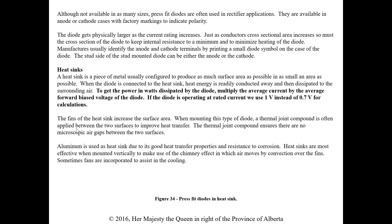The fins of the heat sink increase the surface area. When mounting this type of diode, a thermal joint compound is often applied between the two surfaces to help heat transfer and ensure there are no microscopic air gaps, which would cause extreme heat buildup. Aluminum is used as a heat sink material due to its good heat transfer properties and resistance to corrosion. Heat sinks are most effective when mounted vertically to make use of the chimney effect, where air moves by convection over the fins. Sometimes fans are incorporated to assist in cooling.